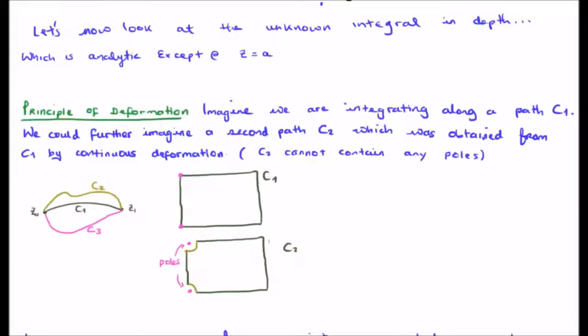We're going to employ the principle of deformation. Imagine we are integrating along a path c1. We could imagine that we have a second path which is not c1, but is obtained from c1 by continuous deformation. Of course, the path c2 can't have any poles.